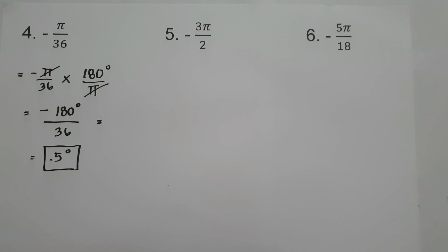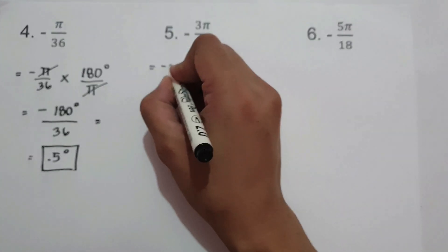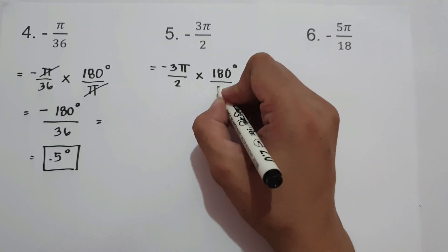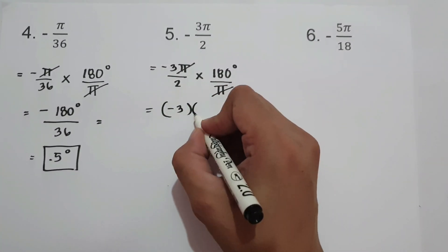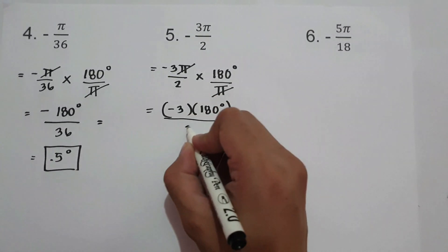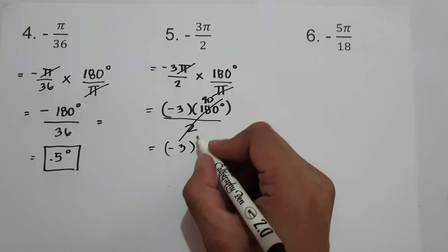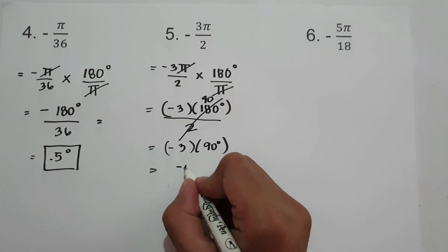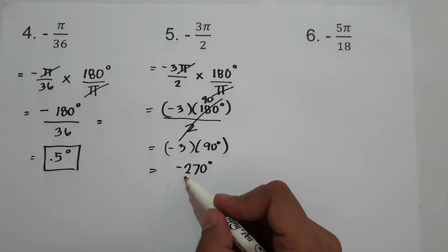On number 5, convert the radians to degrees. We have negative 3 pi over 2. Multiply by 180 degrees over pi and cancel pi, giving us negative 3 times 180 degrees divided by 2. Since 180 divided by 2 is 90, we have negative 3 times 90 degrees, which is negative 270 degrees. So negative 3 pi over 2 is negative 270 degrees.